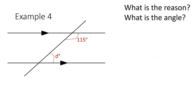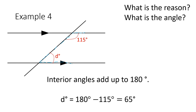Let's have a look at this example. What is the reason and what is the angle? Looking at the pair of parallel lines, I can draw my C shape there, meaning it's co-interior angles. So D is equal to 180 take away 115, which gives an answer of 65 degrees. The reason is because co-interior angles add up to 180 degrees.